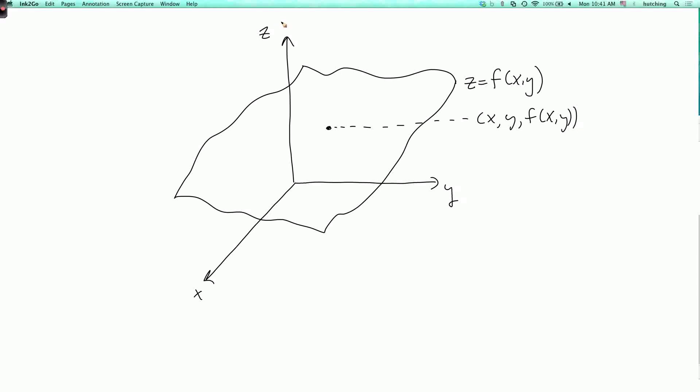Now what we're basically doing in partial derivatives is looking at the slope of this graph. But we're looking at the slope of the graph in a particular direction. So let me draw a curve here. So this red curve, this is the part of the graph where y is fixed and only x varies.